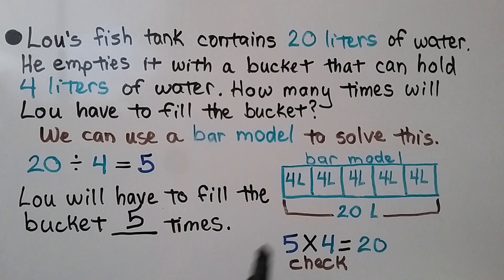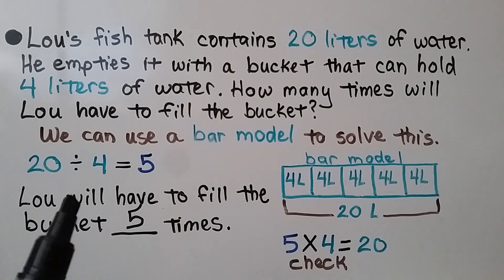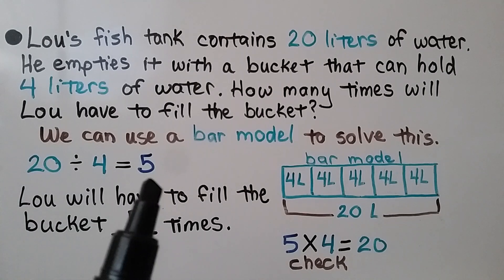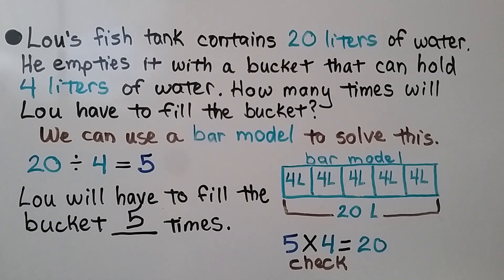In our bar model we have five parts with four liters in each part. We can check our math — the inverse operation of division is multiplication. So we do five times four equals 20, and that's correct.